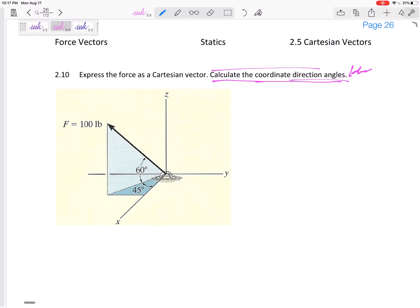We'll find the coordinate direction angles later. But this first sentence, express it as a Cartesian vector, and we are given spherical angles. So what's my process? I'm going to draw this, take my force and break it into Z and XY, and take XY and break it into X and Y. It's a 2D problem. So step one, take this and break it up into its Z component and its XY component. That's a 2D problem.